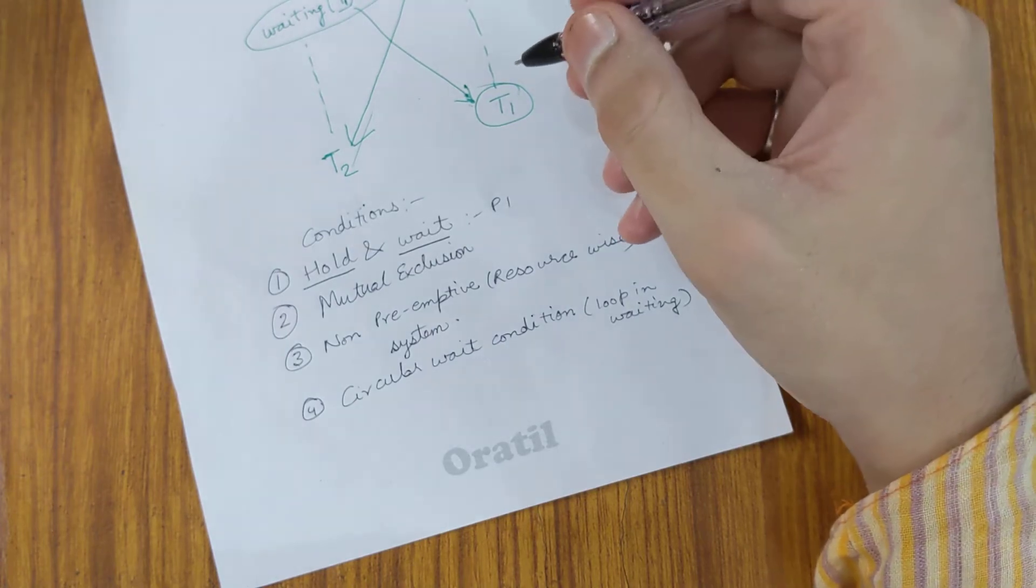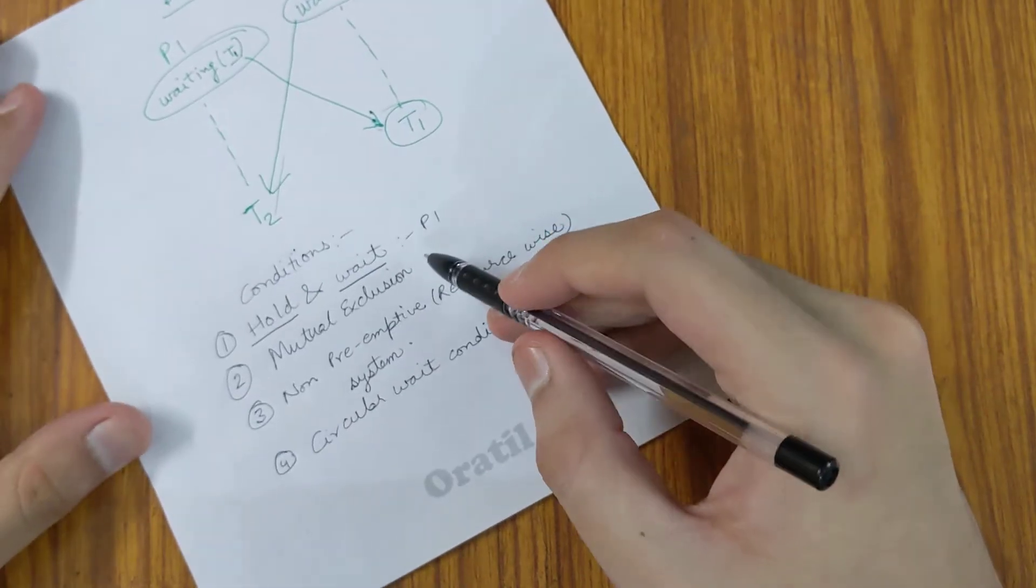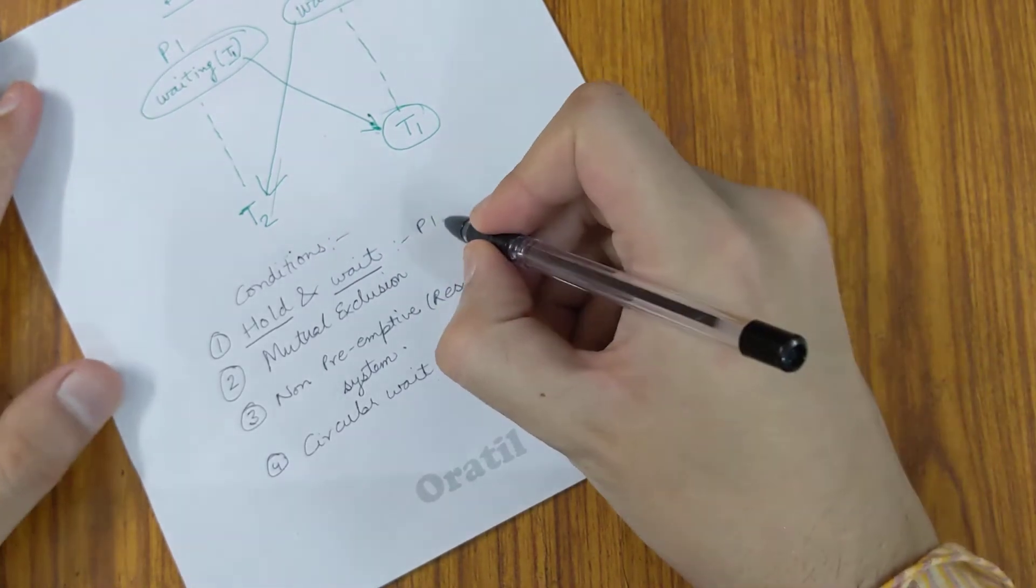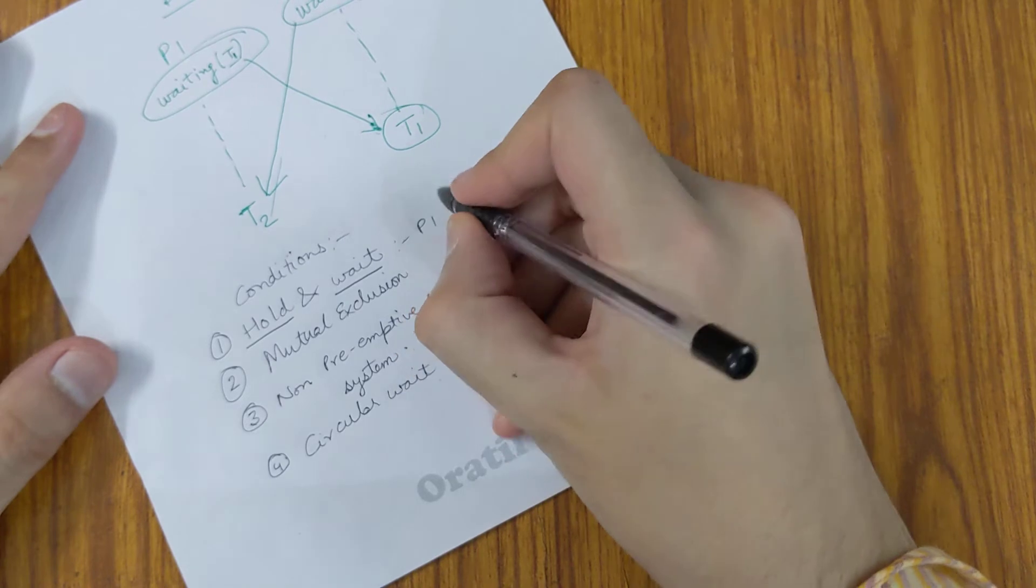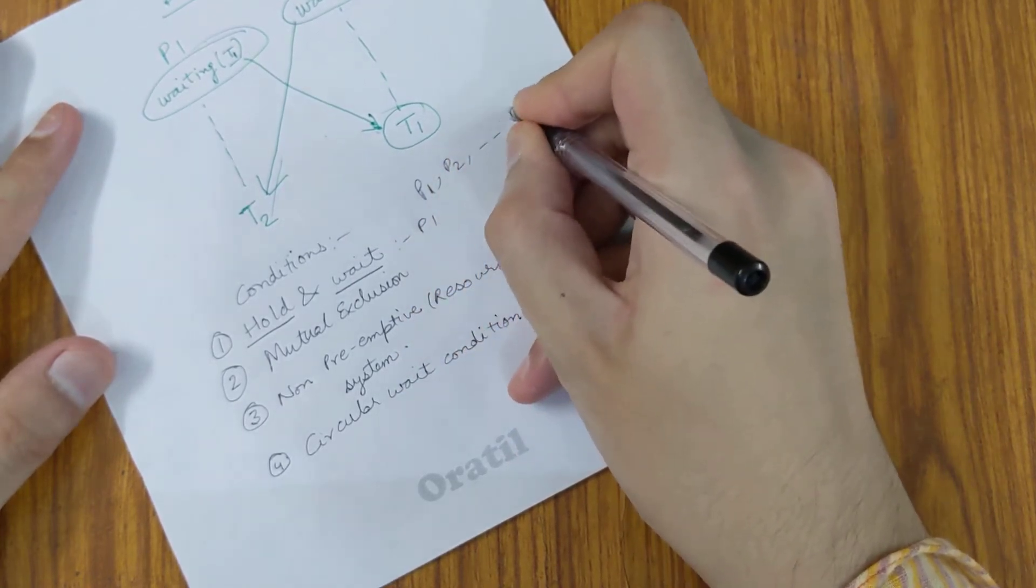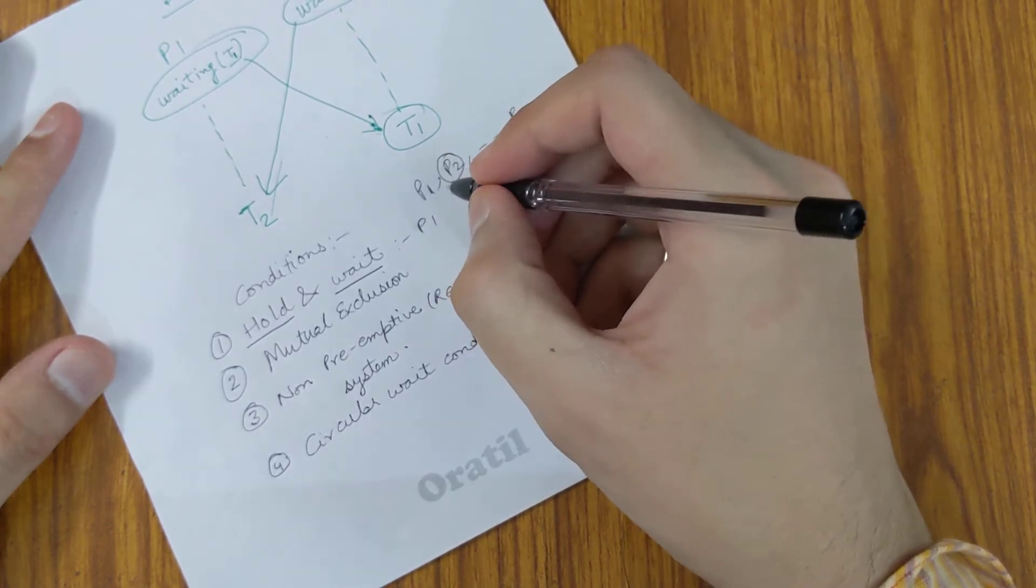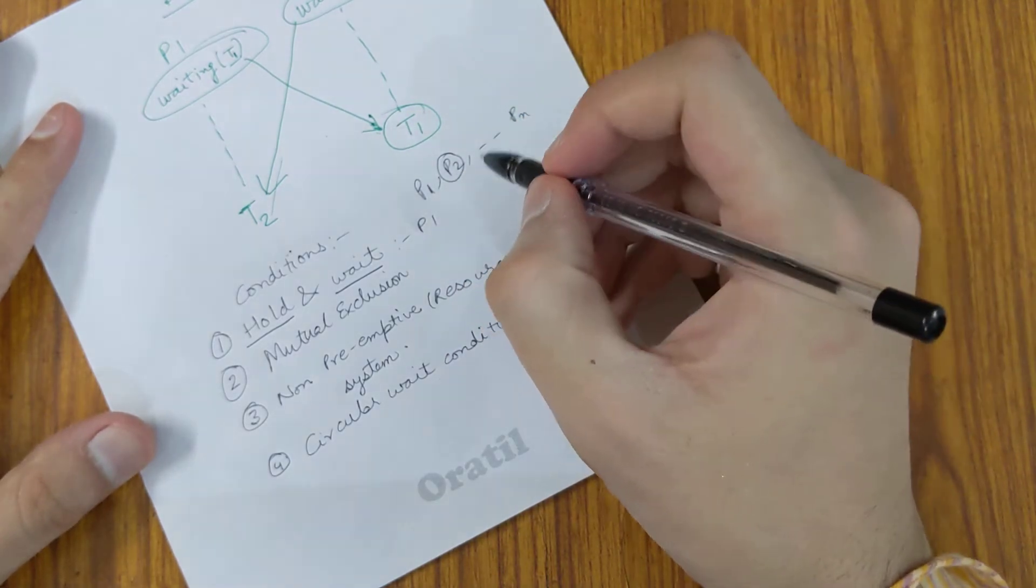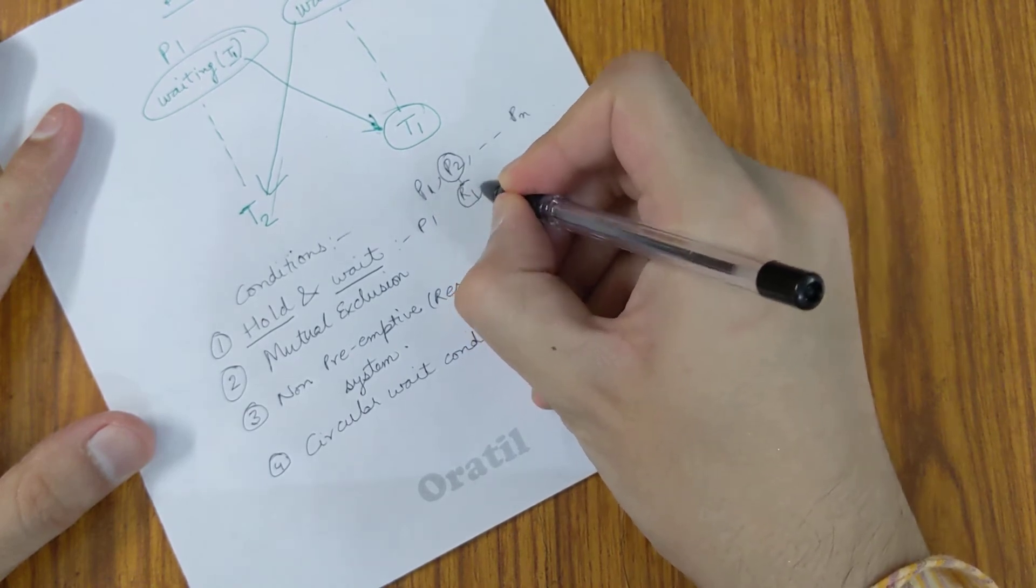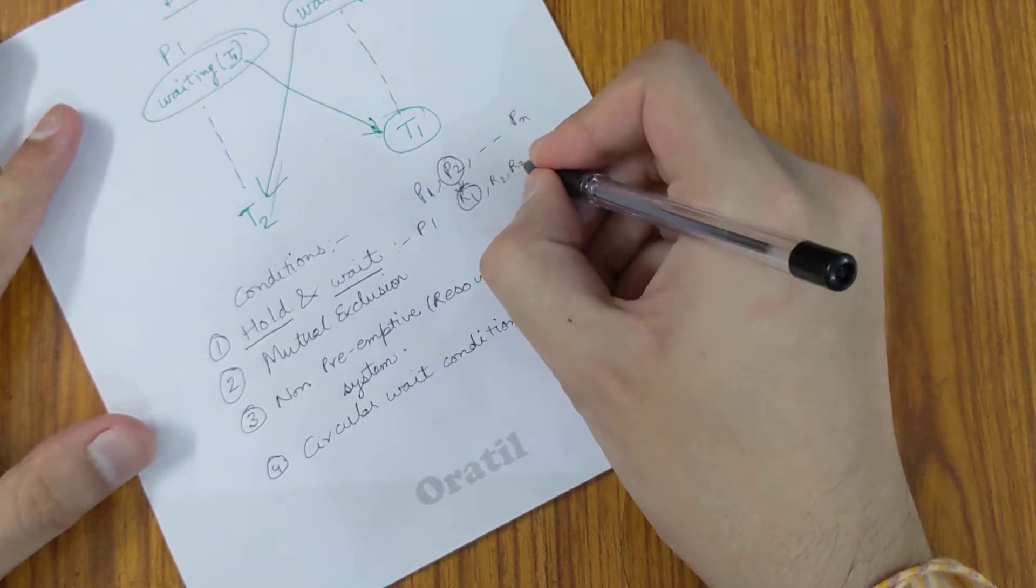The first condition is hold and wait. Let me explain: let's say we have processes P1, P2, up to Pn. There must be a process, say P2, which is holding a resource - R1 is held by P2, and it is waiting for some other resources, for example R2, R3, etc.